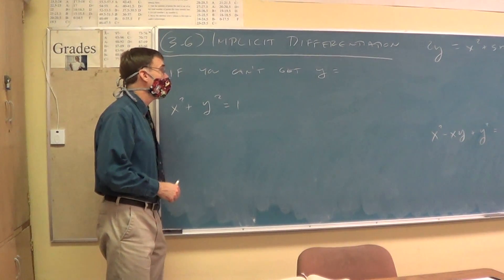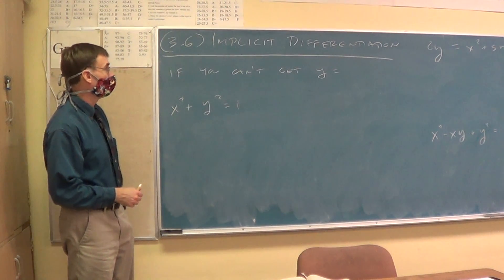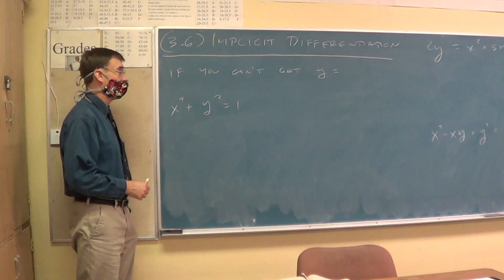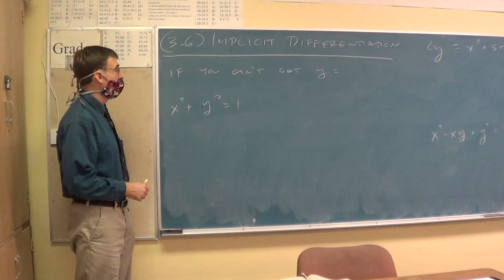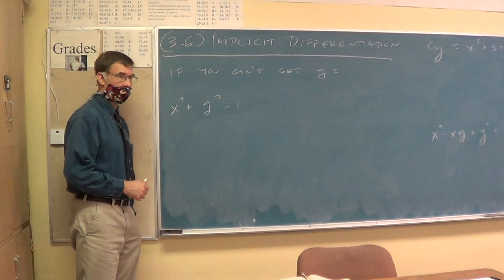So today we're in 3.6. The title is a little bit scarier or fancier than it's going to be. So this is called Implicit Differentiation.